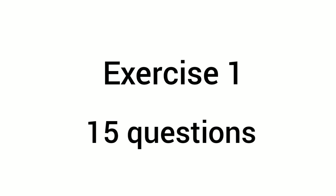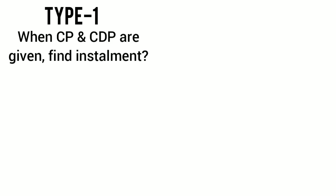In your textbook there are 15 questions divided into four types. The first type is when they give you cash price and cash down payment, like in question number three, six, seven, and nine. I've done this for you in the last video.